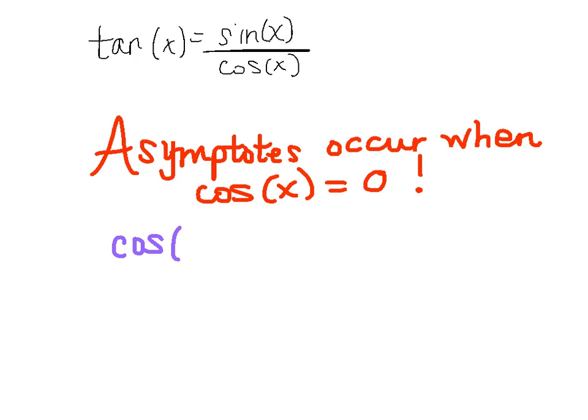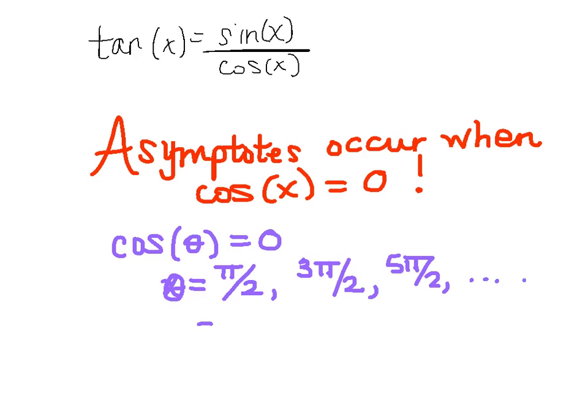Cosine of an angle will equal 0 whenever the x coordinate is 0. That happens when the angle is pi over 2. It happens again at 3 pi over 2, and it'll keep happening as we round the circle over and over again at 5 pi over 2, etc. If I go backwards, then that will happen at negative pi over 2, negative 3 pi over 2, negative 5 pi over 2, etc.